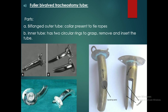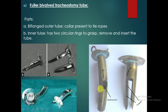Now, Fuller's bi-valved tracheostomy tube. The parts of Fuller's bi-valved tracheostomy tube are: the bi-flanged abductor tube — this is the abductor tube and these are the flanks. A collar is present to tie the rope — this is the collar and this is the opening where you can tie a rope. The inner tube — this is the inner tube; it has a circular ring with two gaps to remove and insert the tube.